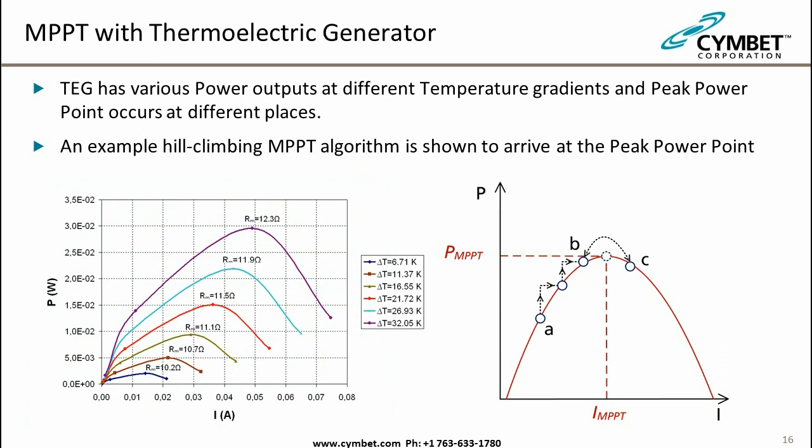This is an example of a thermoelectric generator. The family of curves differs by temperature gradient — the bottom blue line at only 6.7 degrees Kelvin differential versus 32 degrees Kelvin on top. You can see the maximum peak power point moves around as the temperature gradient changes. The right-hand curve shows the hill climbing algorithm in action: moving from A to B, then to C, discovering that's too far, and homing back in on the maximum peak power point. This is an active algorithm.